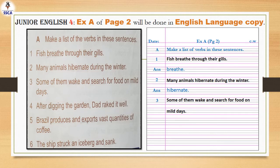Then write down question number 3: Some of them wake and search for food on mild days. Kuch animals jagte hain aur dhoondte hain khana jab mausam thora sa garam hota hai. In this sentence we have two verbs: number one, wake; and number two, search.